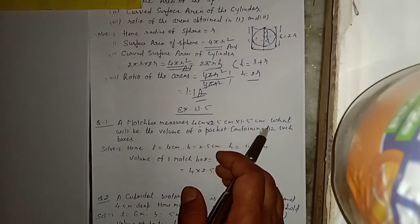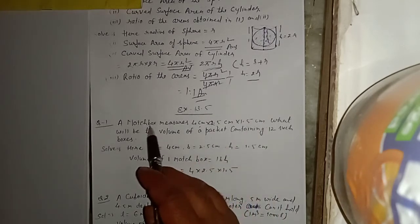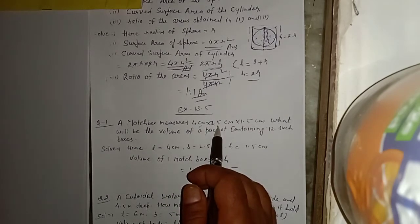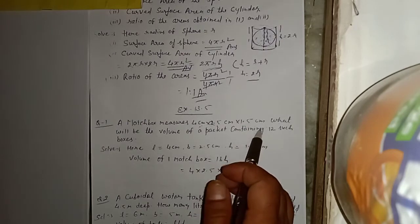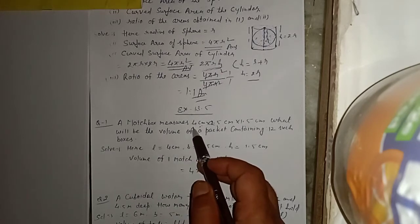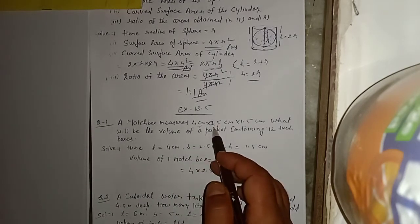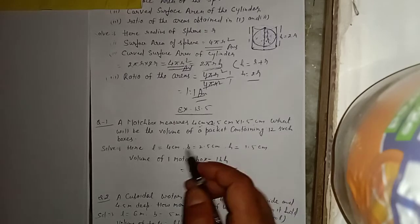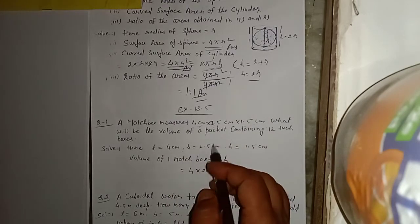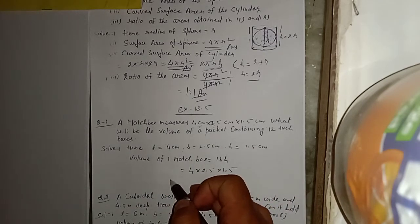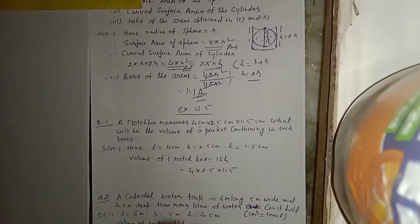यानि 12 boxes का volume कितना होगा। एक matchbox का measure दिया है: 4 cm, 2.5 cm, 1.5 cm। तो l = 4 cm, b = 2.5 cm, h = 1.5 cm। Volume of one matchbox = l × b × h।